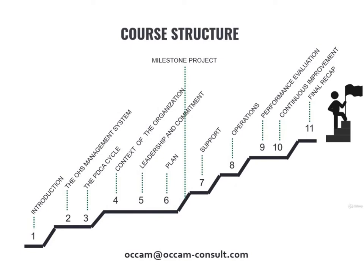As for the course structure, you may see here your global path, which is made of 11 chapters and one milestone project at the middle. The course starts with Chapter 1, which is an introduction chapter that includes this overview, a discussion of what a certification is, and a chapter on how to best approach this course. In this first chapter, we will also learn about certifications and the certification cycle.